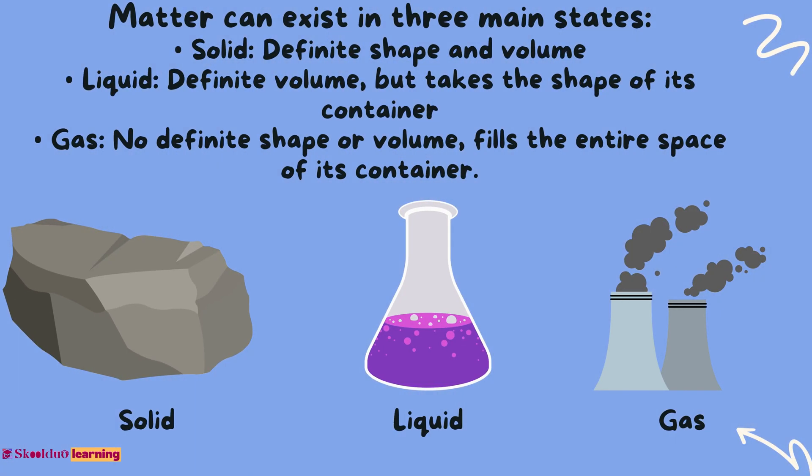Matter can exist in three main states: Solid — definite shape and volume. Liquid — definite volume but takes the shape of its container. Gas — no definite shape or volume; fills the entire space of its container.